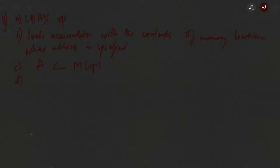LDAX RP is a single-byte instruction. The opcode LDAX consumes one byte, and since the register pairs are internal memories of the microprocessor, they do not consume any data byte. This instruction has only two machine cycles: the opcode fetch machine cycle and the memory read machine cycle. The address is specified in the register pair, giving 7 T-states and an execution time of 2.24 microseconds.